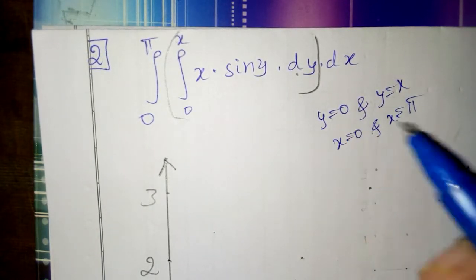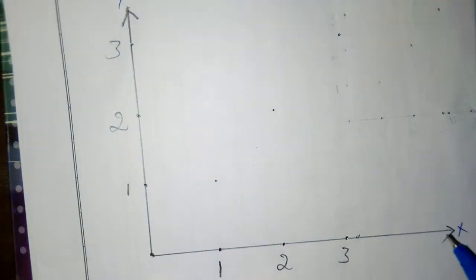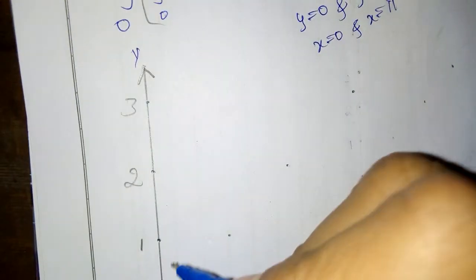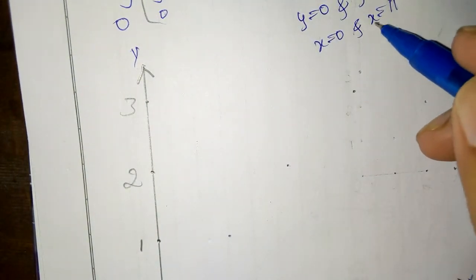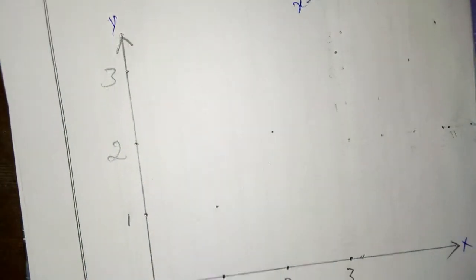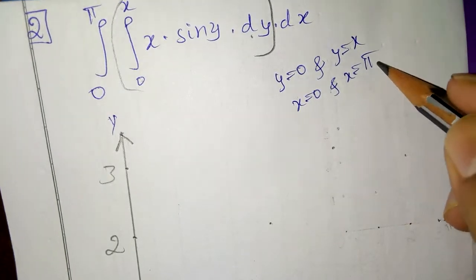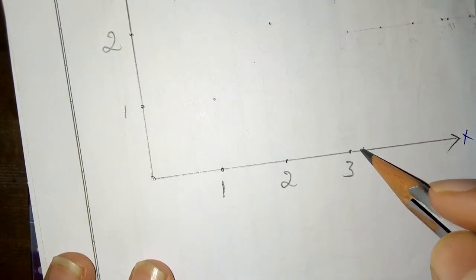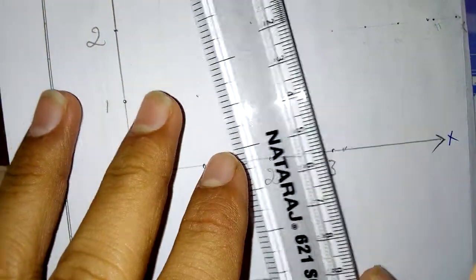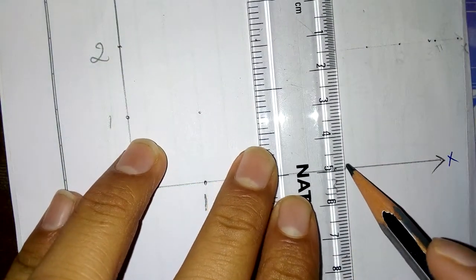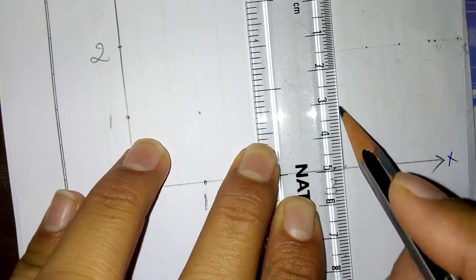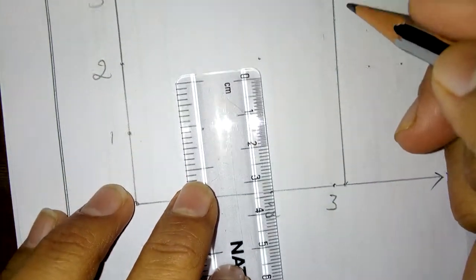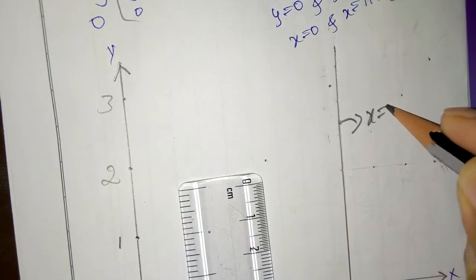Now, y is equal to 0 is always represented by the x-axis. Similarly, x is equal to 0 is represented by the y-axis. What is x is equal to π? Pi means 3.14, so after 3 on the x-axis, pi comes here. We draw a line parallel to the y-axis at π on the x-axis. This becomes the line x is equal to π.